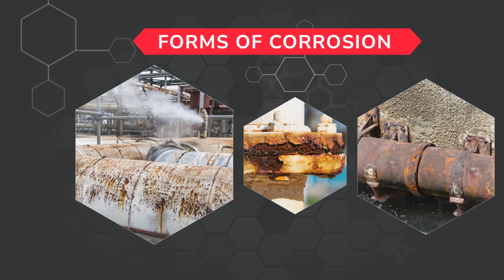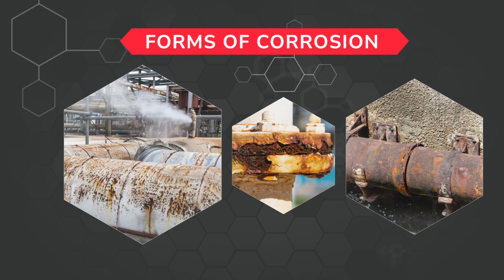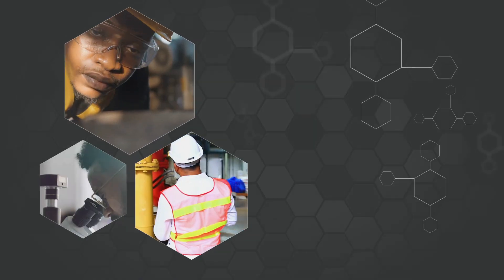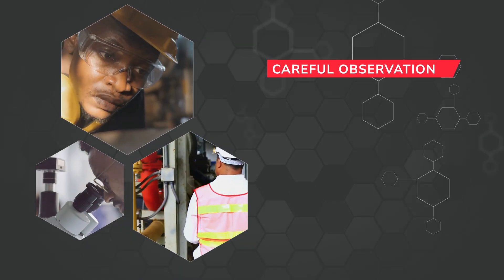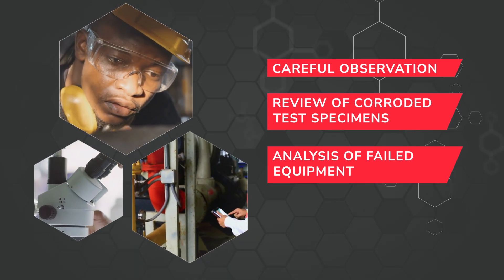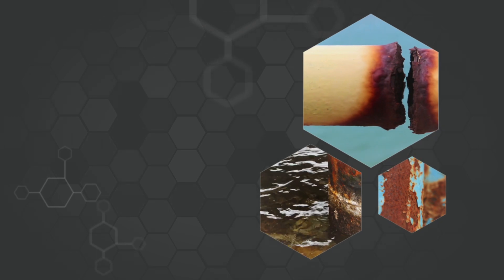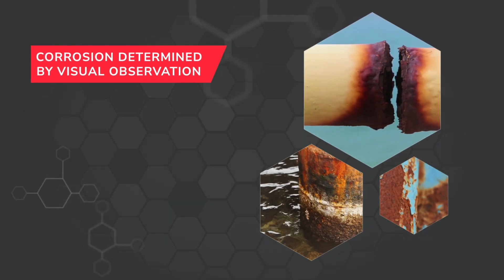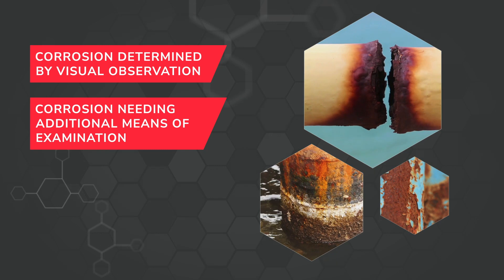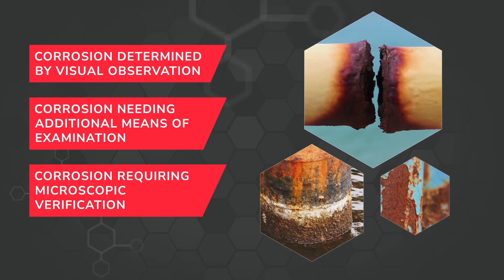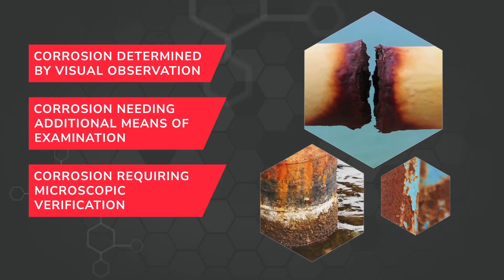The forms of corrosion are classified by the ways in which they display. Identifying forms of corrosion involves careful observation, review of corroded test specimens, and analysis of failed equipment. In general, corrosion is grouped into three types: corrosion determined by visual observation, corrosion needing additional means of examination, and corrosion requiring microscopic verification.